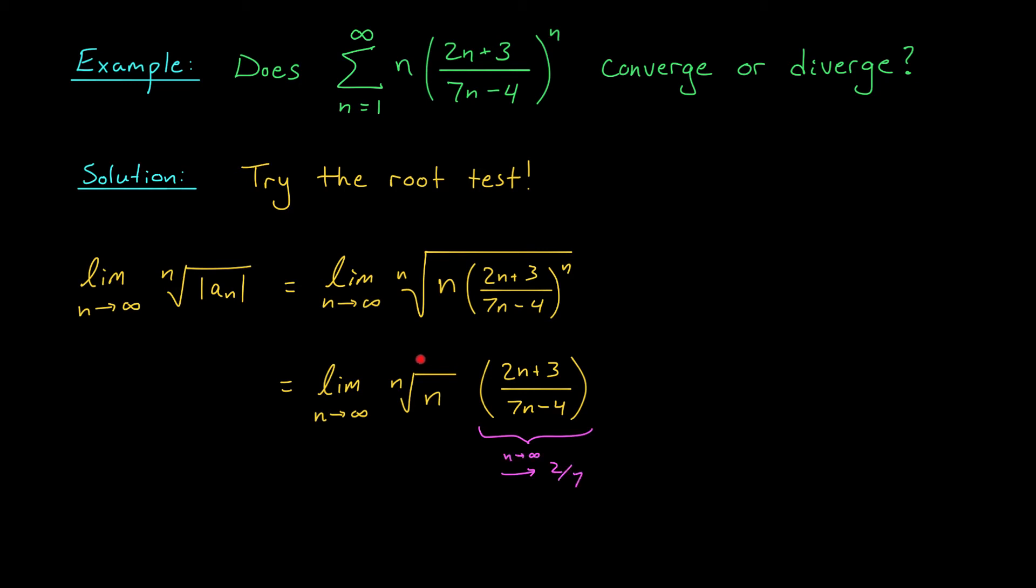This term tends to 2/7 when n goes to infinity. So we just need to determine what happens to the nth root of n when n goes to infinity. This might look like a complicated limit, but it's really not so bad—we can evaluate it using L'Hôpital's rule. Let me do this calculation off to the side.